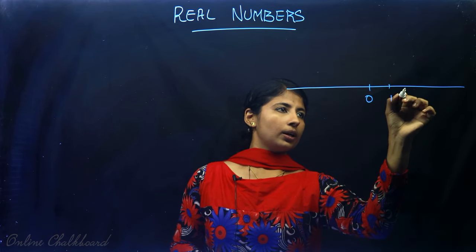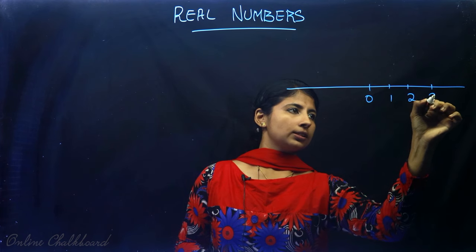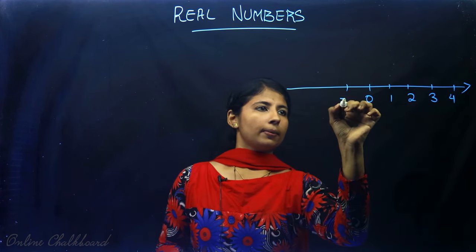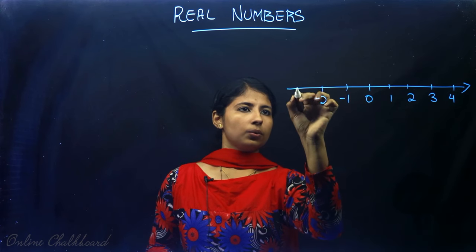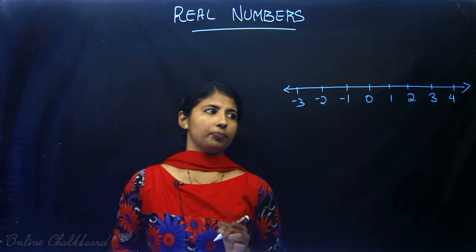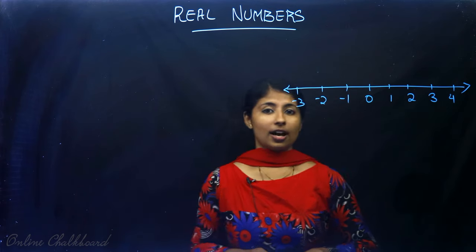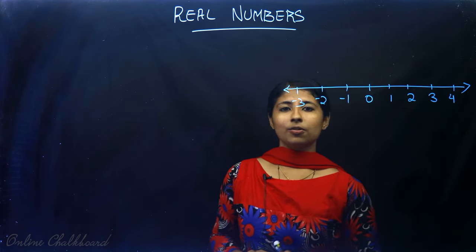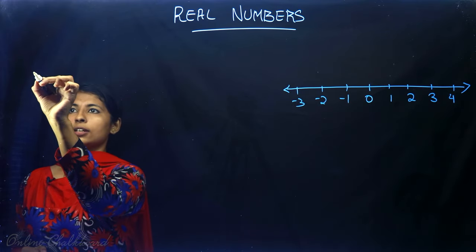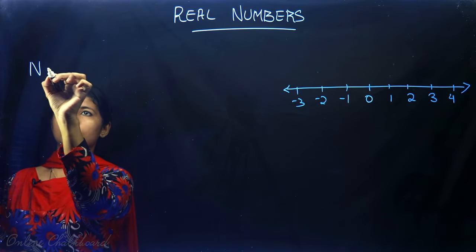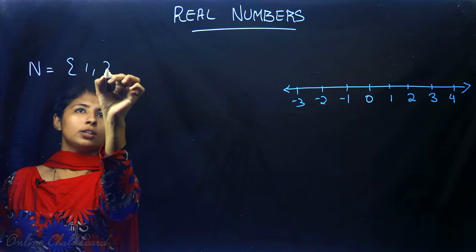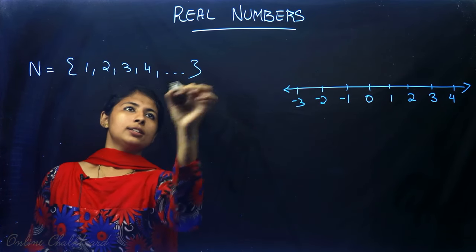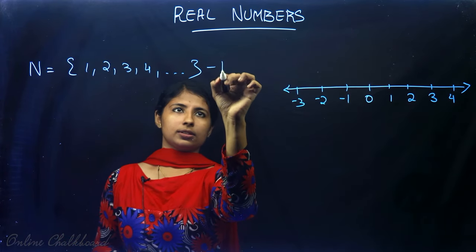On the number line we have 0, 1, 2, 3, 4, and so on. If we consider just the numbers 1, 2, 3, 4, etc., written as N = {1, 2, 3, 4, ...}, this is called natural numbers.